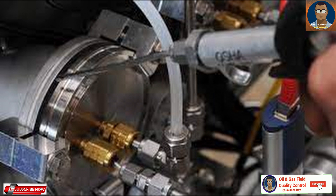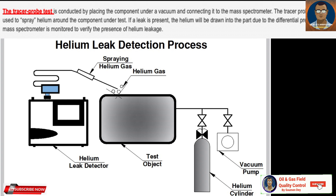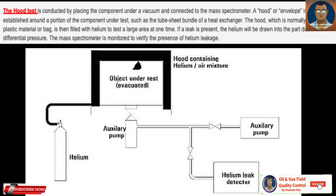The tracer probe test is conducted by placing the component under a vacuum and connecting it to the mass spectrometer. The tracer probe is then used to spray helium around the component under test. If a leakage is present, the helium will be drawn into the part due to the differential pressure, and the mass spectrometer is monitored to verify the presence of helium leakage.